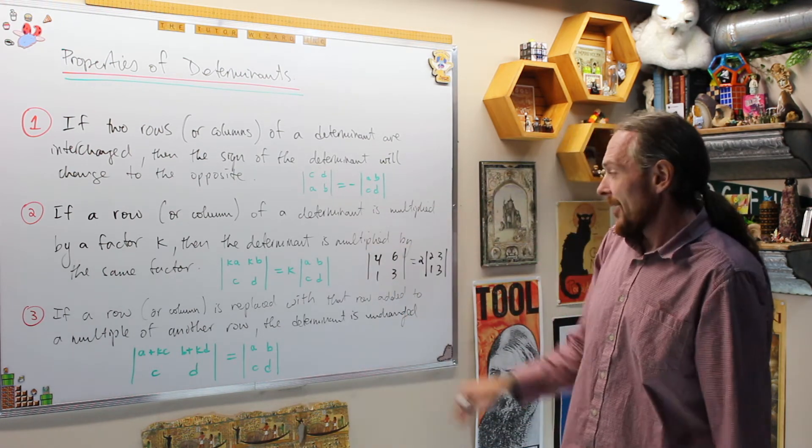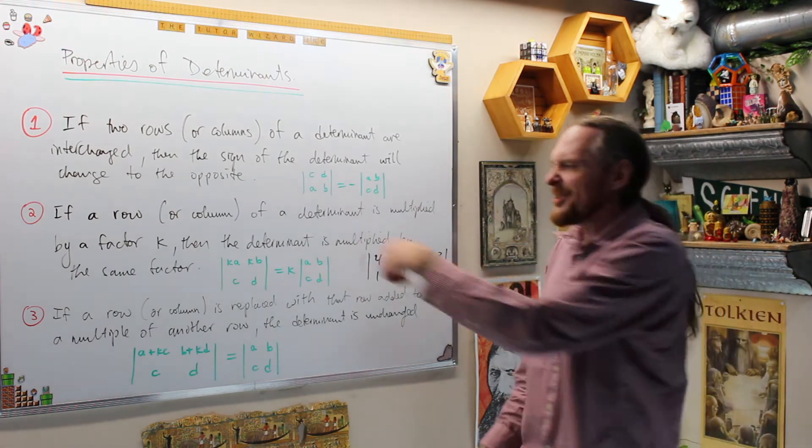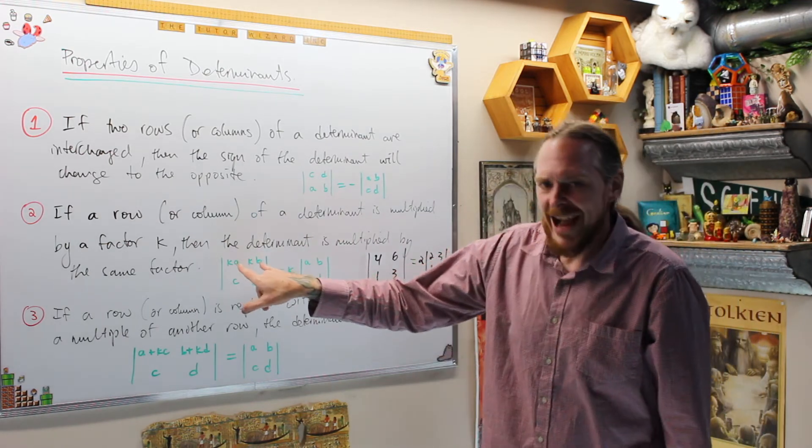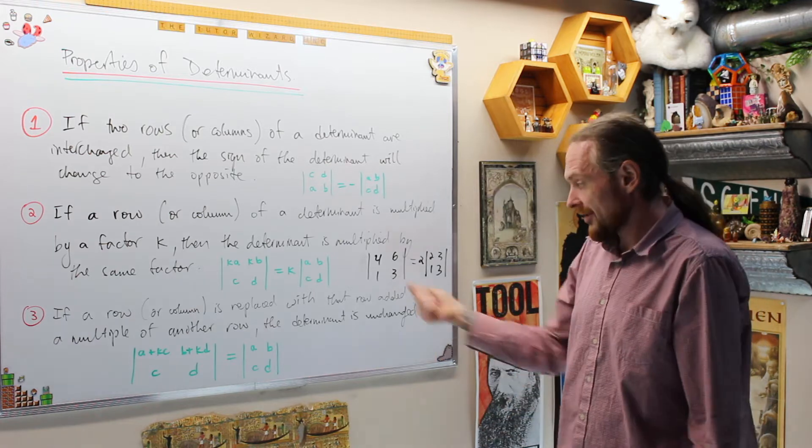If you want to do that business and multiply by one fourth, multiply by one, put the one fourth in and keep the four out. But the moral is don't use this property unless you have to, and then when you do, remember, factor things out of the row. Don't try to multiply by one over. That's the most common mistake.